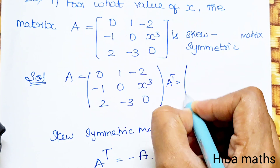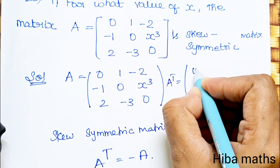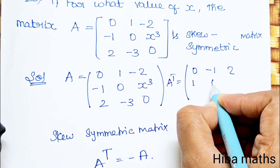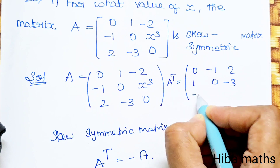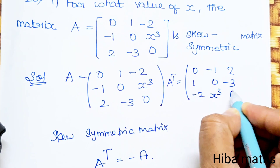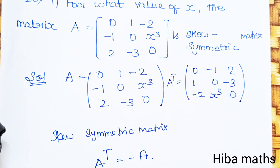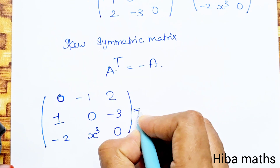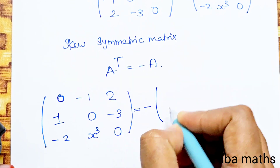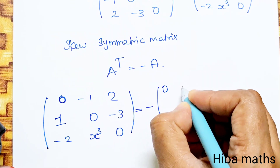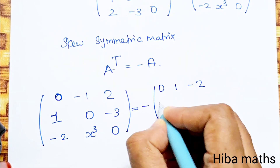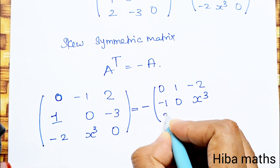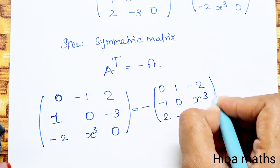A transpose equals [0, -1, 2; 1, 0, -3; -2, X³, 0]. Setting A transpose equal to minus A, minus of A gives us [0, -1, 2; -1, 0, -X³; 2, minus 3, 0] equal to minus of [0, 1, -2; -1, 0, X³; 2, -3, 0].